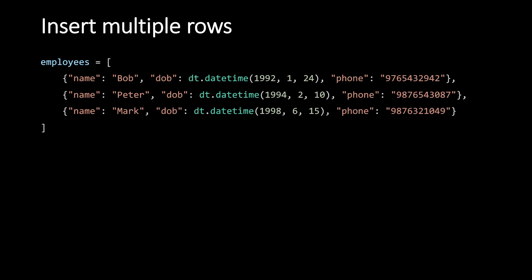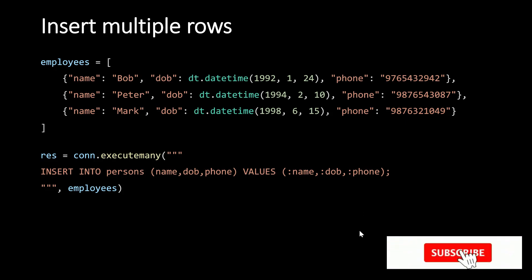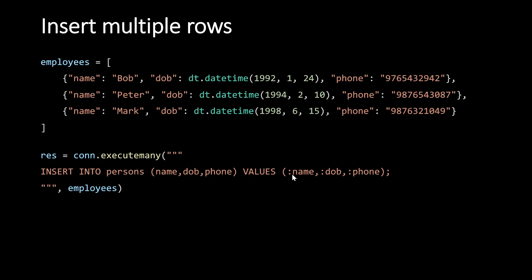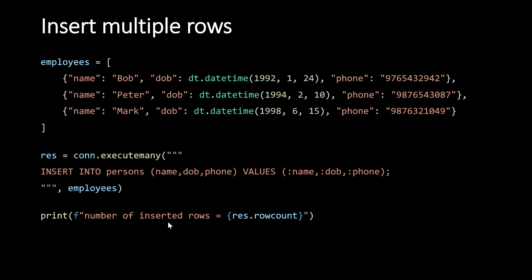What if we want to insert multiple rows? Obviously you could do a for loop, but there's a more efficient way — executemany. You provide a single SQL script, and instead of a single dictionary for the value placeholders, you give a list of dictionaries. The SQL command will run for each dictionary in the list. Using connection.executemany() with a list of dictionaries is both more readable and more efficient than an explicit for loop. executemany also returns a cursor object, and you can see the number of rows inserted via result.rowcount. Commit at the end.